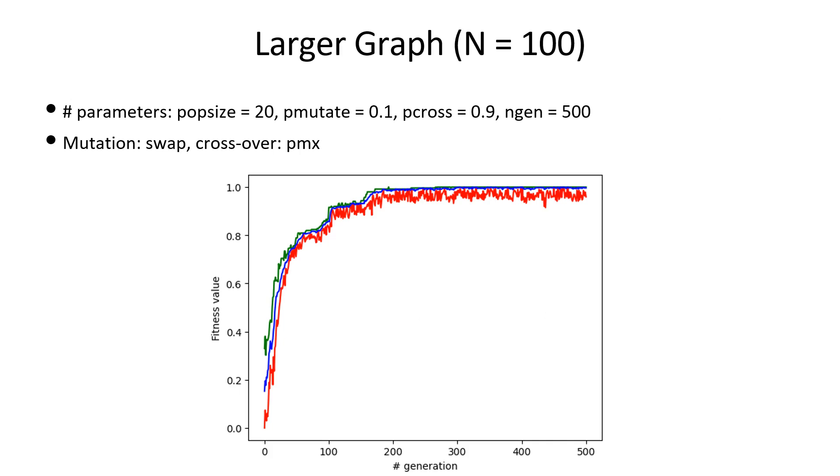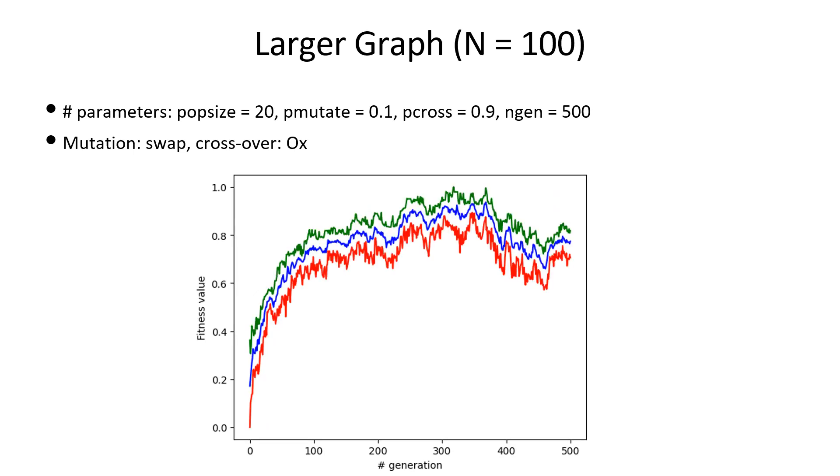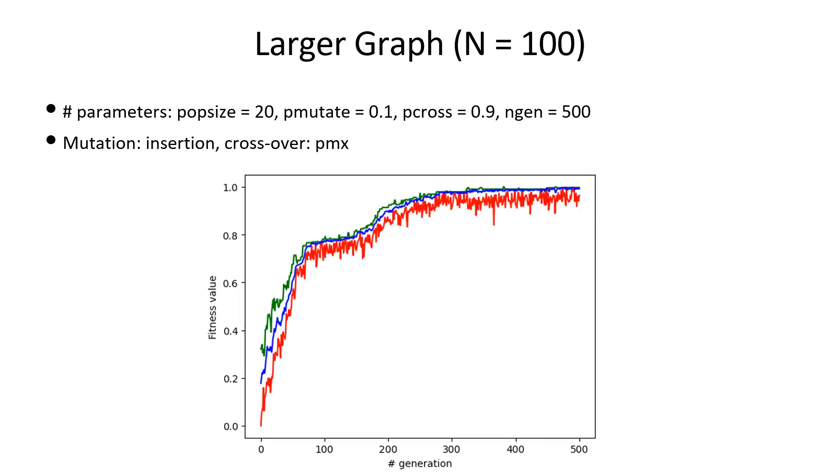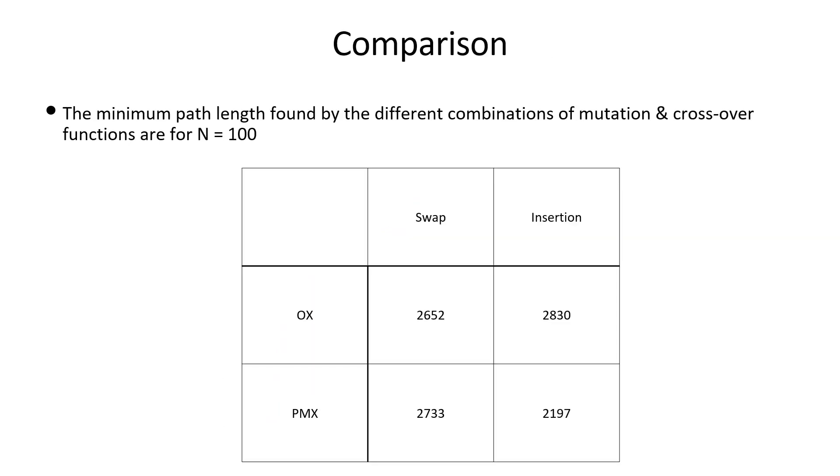Next consider a large graph n equals 100. The table shows that the best method is insertion mutation and PMX crossover.